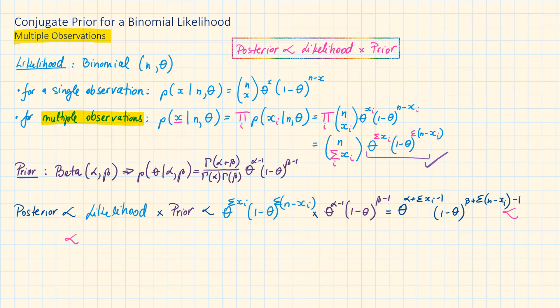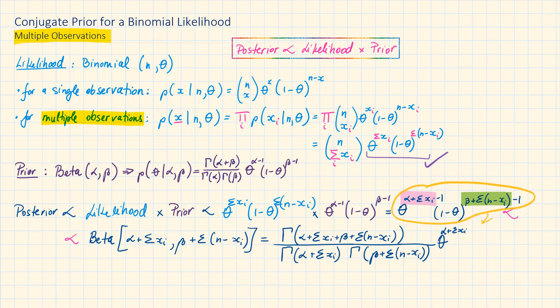We can see that this form looks like a beta distribution with parameters alpha plus sum of xi and beta plus sum of n minus xi. Substituting these parameters into a beta distribution will give us the posterior distribution.